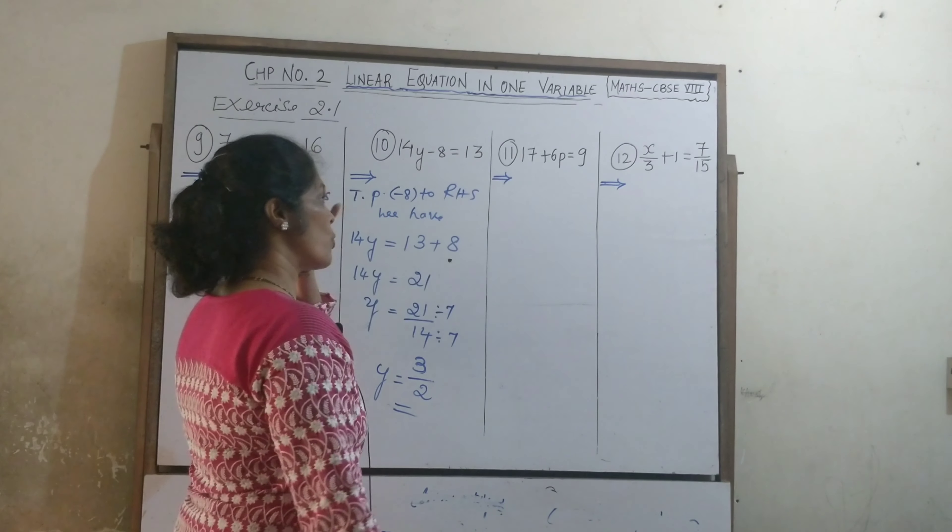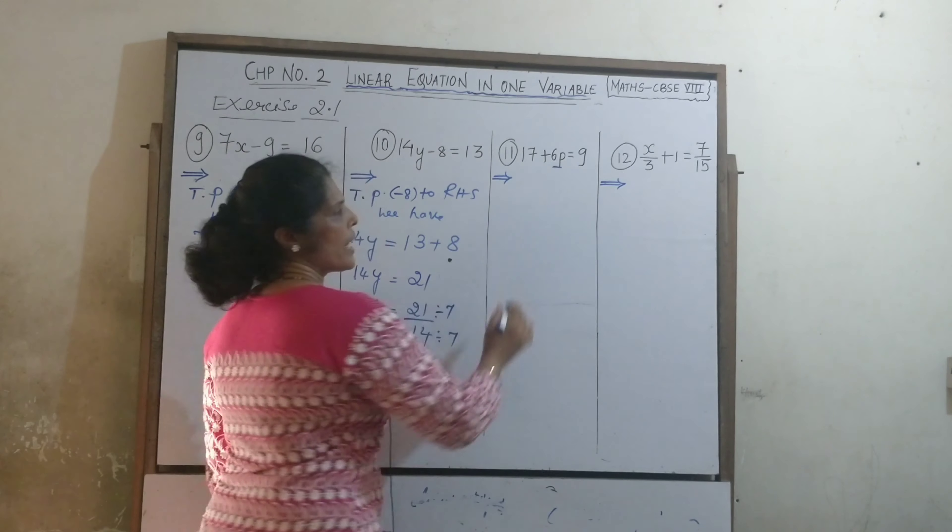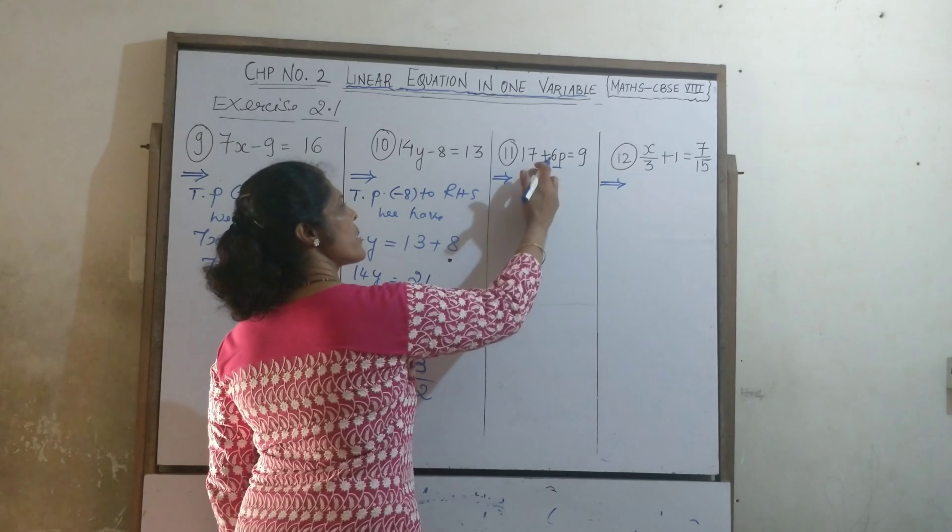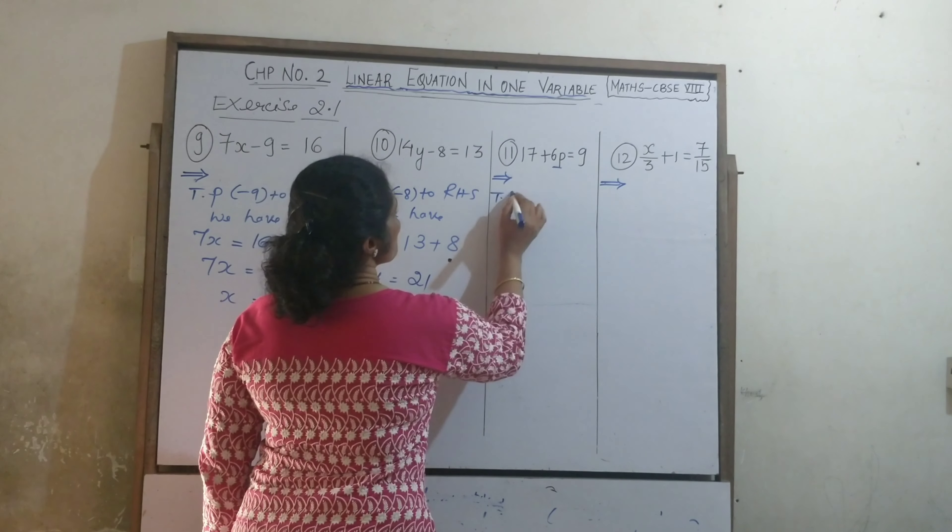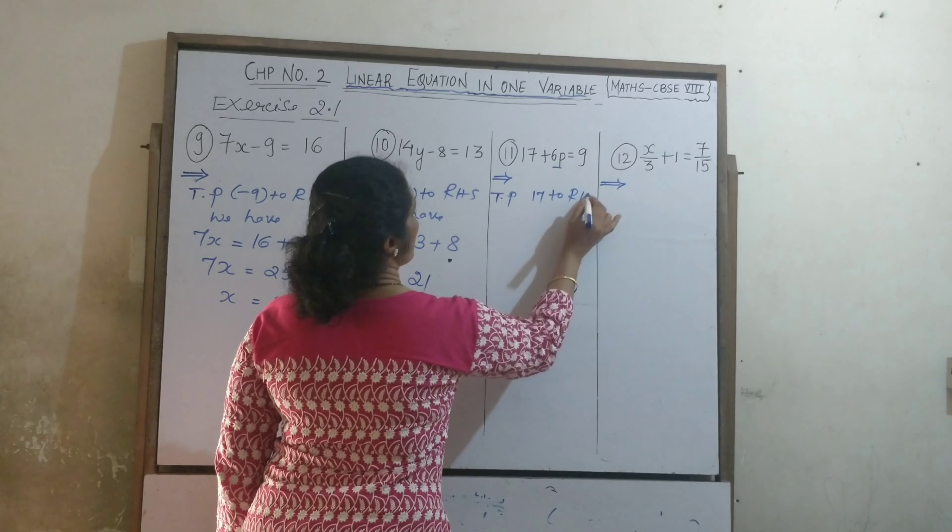Now, we will go to 11th question. Here, 6p is there in LHS. That you write as it is. You transpose 17 to RHS. Transposing 17 to RHS.